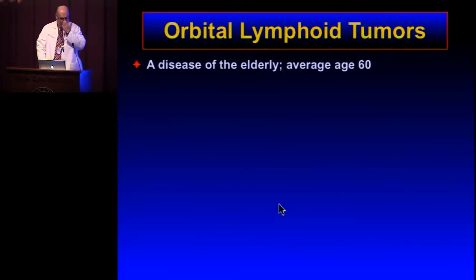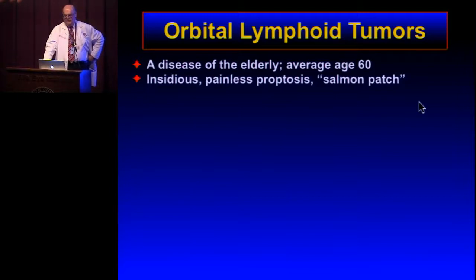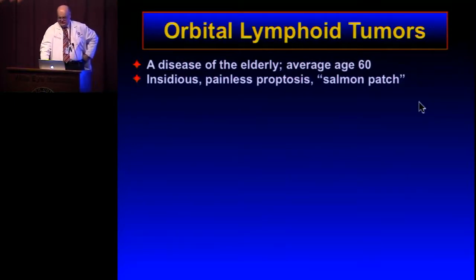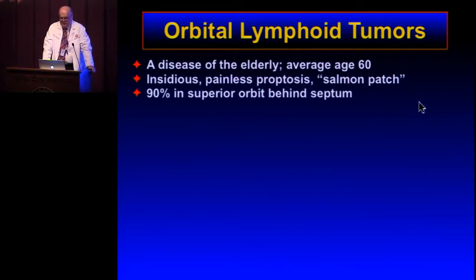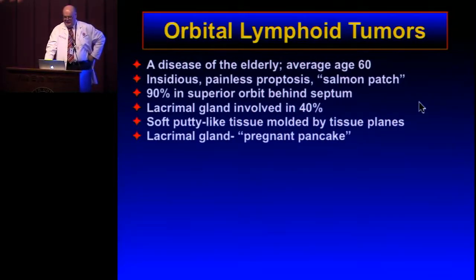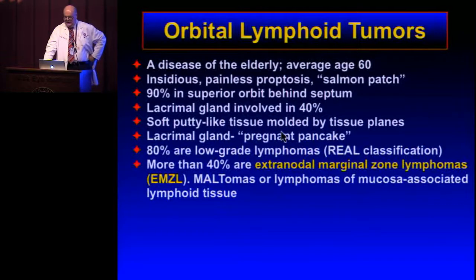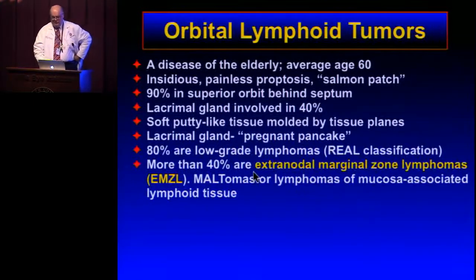Lymphoid tumors tend to be diseases of the elderly with an average age of 60. They are insidious, with painless proptosis that is well tolerated. The classic manifestation is the salmon patch. Ninety percent involve the superior orbit behind the septum, with frequent lacrimal gland involvement. The soft tissue molds to tissue planes, so you don't have big-time symptoms. Most are low-grade lymphomas, and 40-60% are MALT lymphomas — extranodal marginal zone lymphomas of mucosa-associated lymphoid tissue.